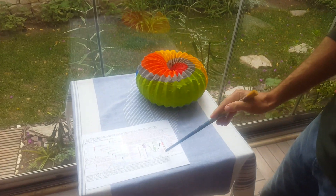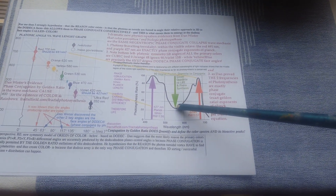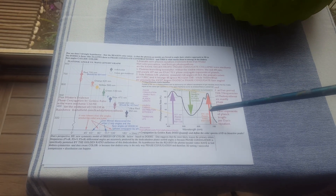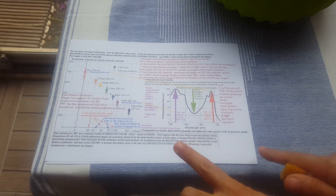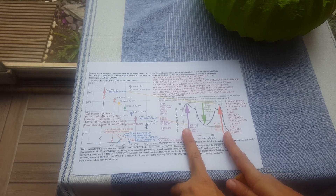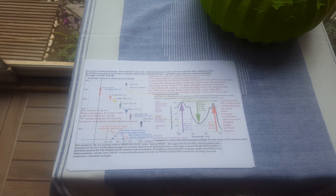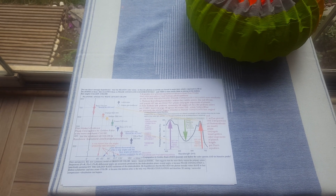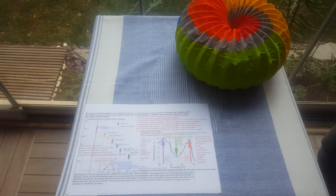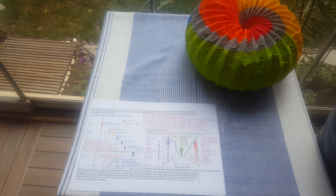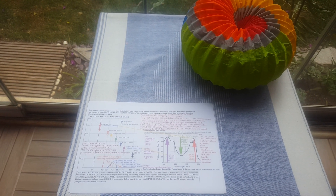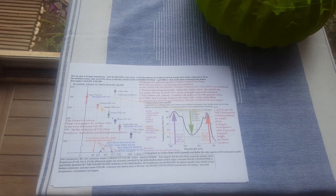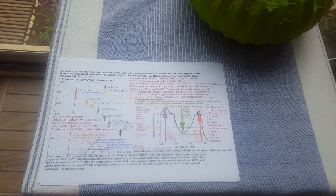We already know that green is the exact opposite of photosynthesis, so the two key frequencies of photosynthesis are well known: purple and red. Dan Winter has proved that the two frequencies of photosynthesis are exactly phase conjugate — exact golden ratio exponents of Planck length, per his equation. What this means is that the two key frequencies of photosynthesis exactly fit with the universal frequency cascade, which is golden ratio exponents of Planck length. Dan strongly hypothesizes that the reason color exists is that photons as toroids are forced to angle their relative approach in 3D to the dodecahedron faces, which allows them to phase conjugate constructively, and this is what causes them to emerge at the dodeca face angles — called color.